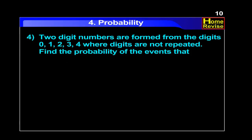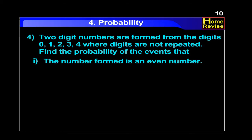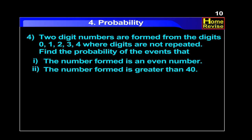Two-digit numbers are formed from the digits 0, 1, 2, 3, 4 where digits are not repeated. Find the probability of the events that: number 1, the number formed is an even number; number 2, the number formed is greater than 40.